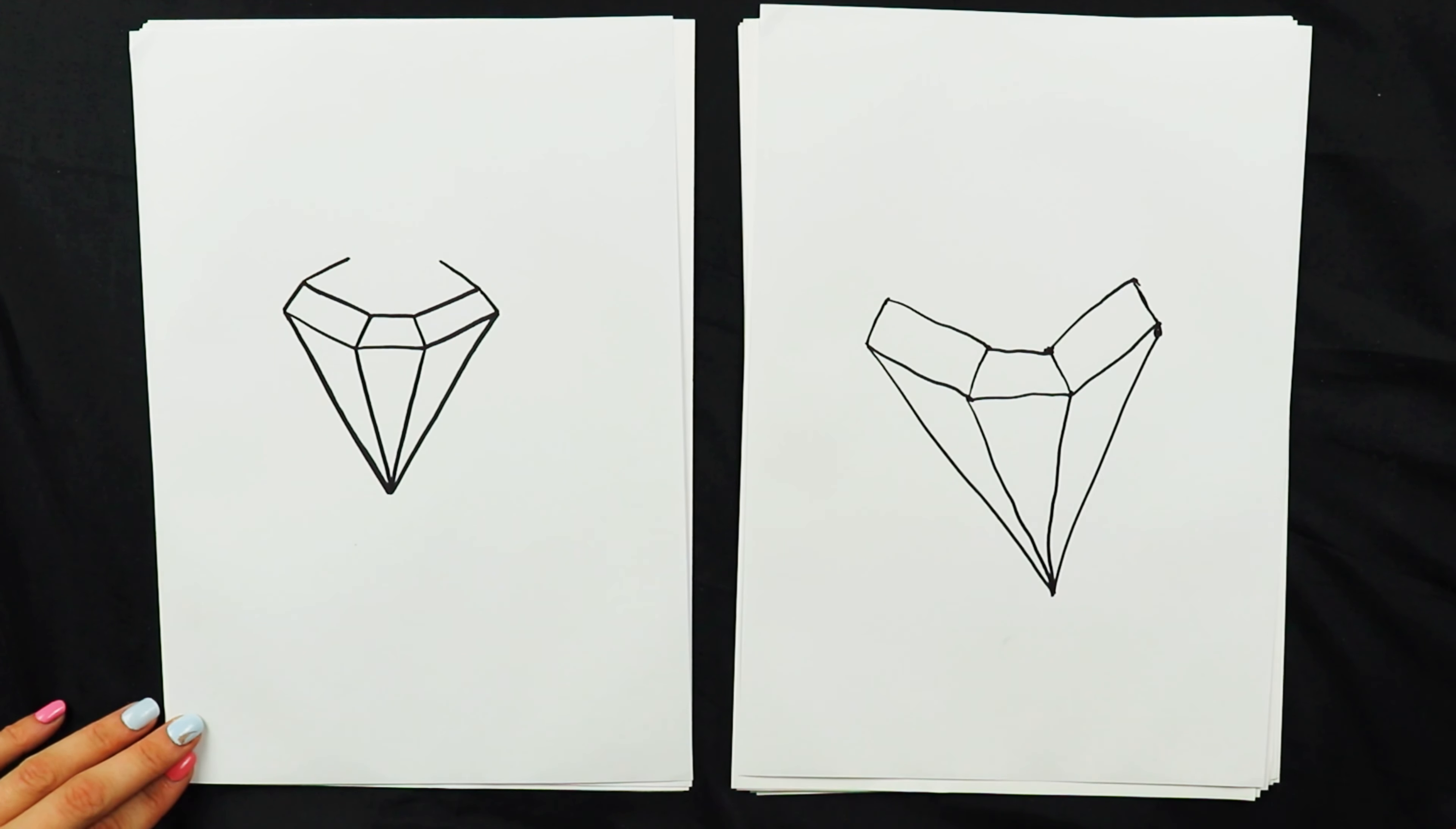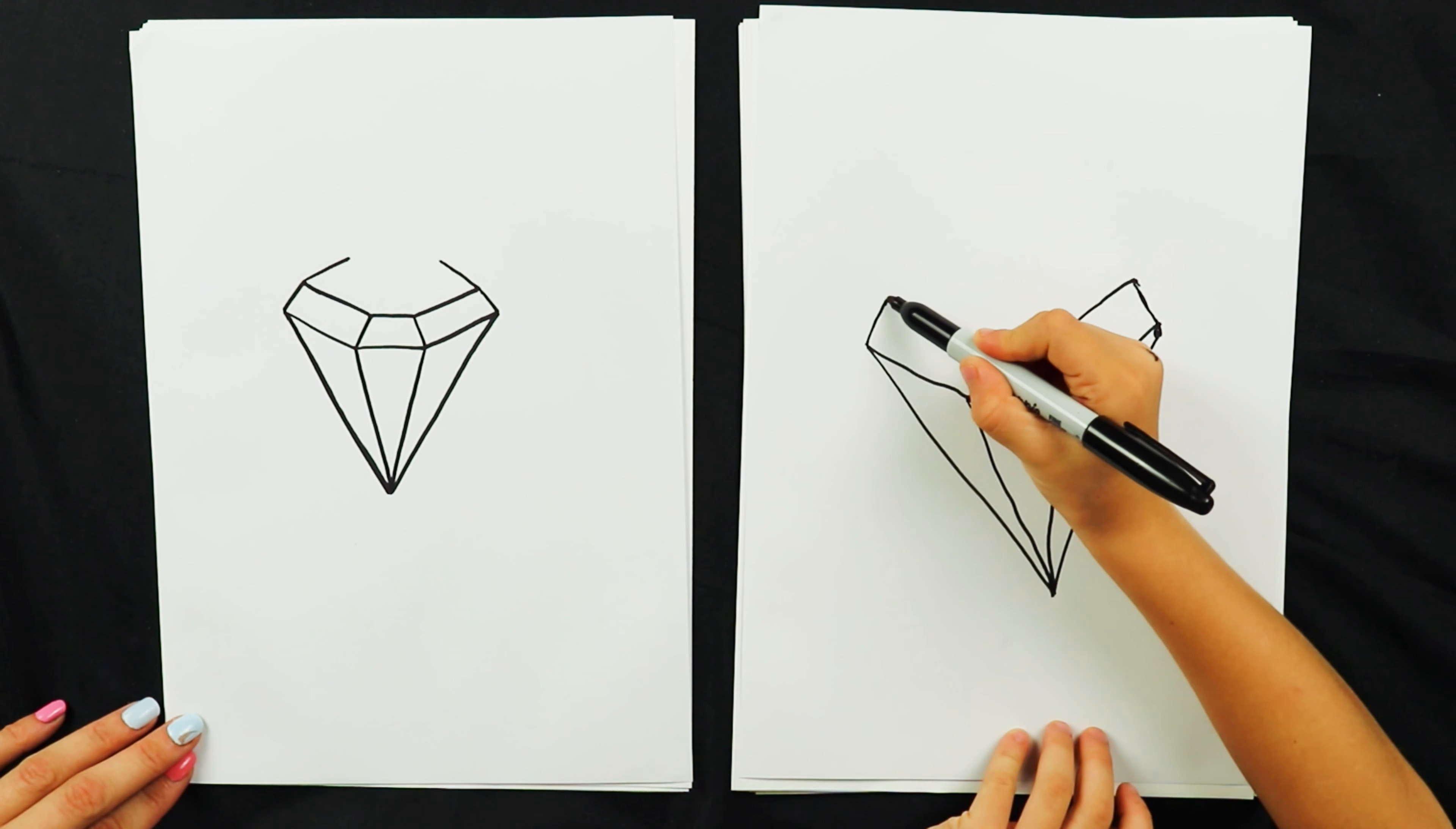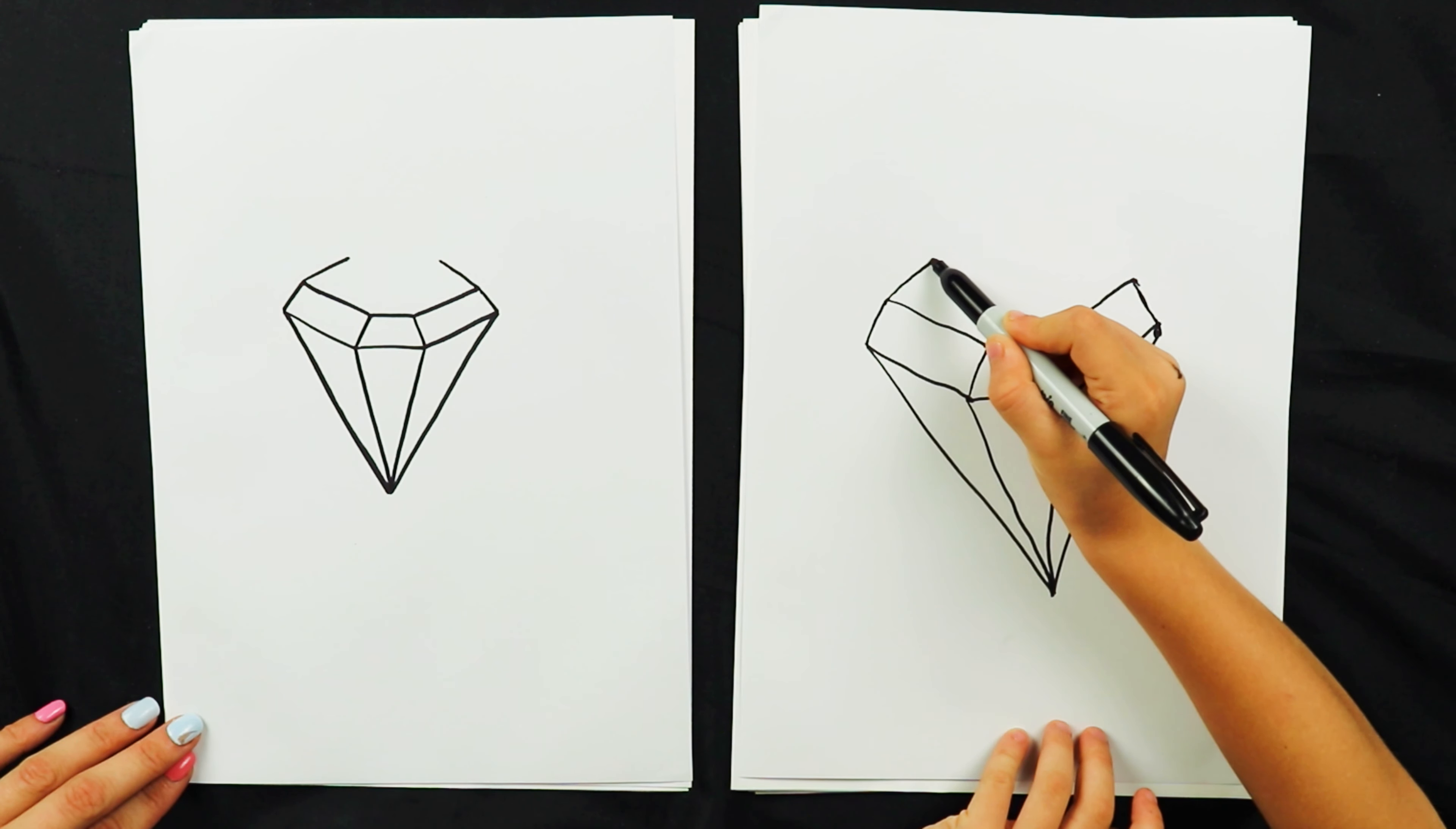Okay, we are ready to draw our diamond. So we're going to start with a V-shape and it's going to be quite a wide V.